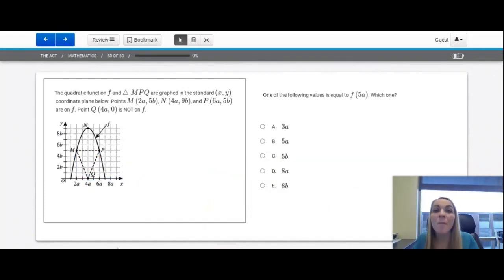Woohoo! We made it to problem 50, the last question in this set. One of the following values is equal to F of 5A. Which one? Okay, so here's our graph. And we need to find 5A. Well, that's right here. We're looking for the spot on the graph that has this x value. What's its output? So we're going to come up here, find that spot, look over on the y-axis. It looks like this has an output value of 8B, which is option E.